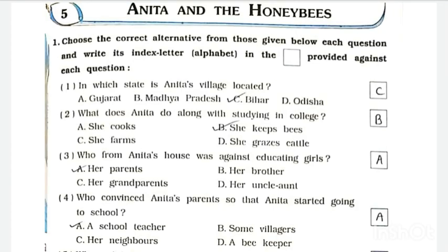Students, today we are going to see Chapter Number 5: Anita and the Honeybees. Let's start Question Number 1 - choose the correct alternative from those given below each question and write its index letter in the box provided against each question. Question Number 1: In which state is Anita's village located? Answer is C - Bihar.